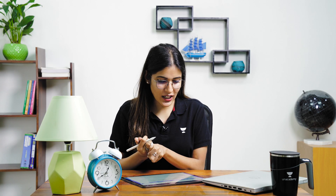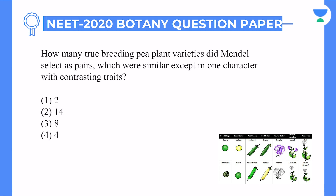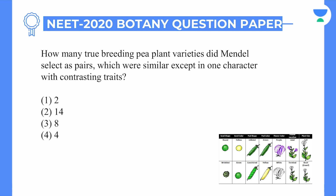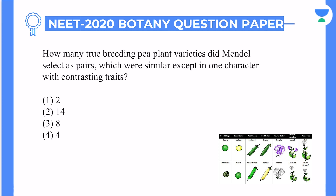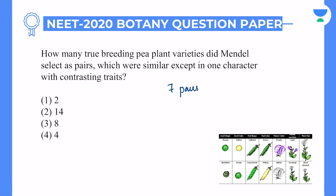The next question is very important: how many true breeding pea plant varieties did Mendel select as pairs which were similar except in one character with contrasting traits? It's asking how many varieties Mendel used when he started his experiment. We had seven pairs, or you can say 14 varieties. In the options, the second option is 14. So the answer will be the second option.